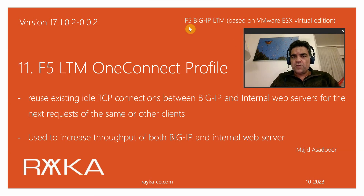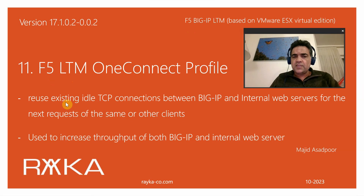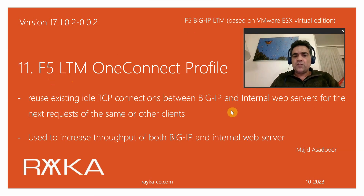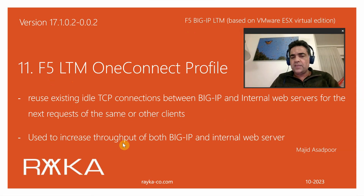Welcome to another video of the course F5 BIG-IP LTM. In this section we are going to talk about F5 LTM OneConnect profile, which helps us to reuse existing idle TCP connections between BIG-IP and internal web servers for the next request of the same or other clients. It is used to increase the throughput of both BIG-IP and internal web servers.